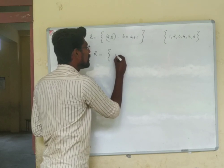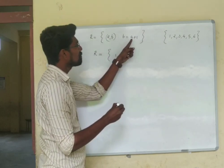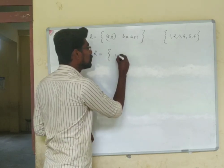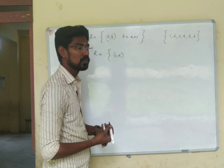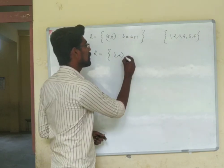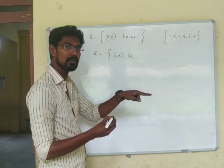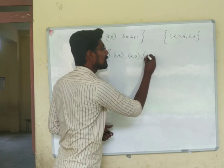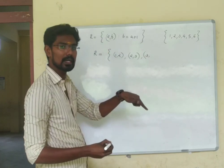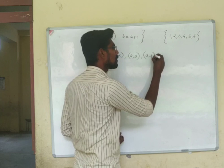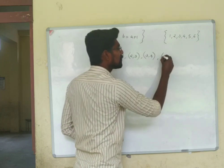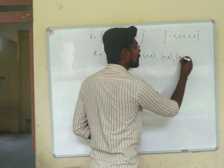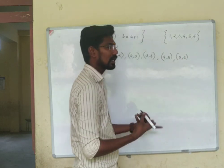Let's list the elements: if B = A + 1, the pairs are (1,2), (2,3), (3,4), (4,5), (5,6).